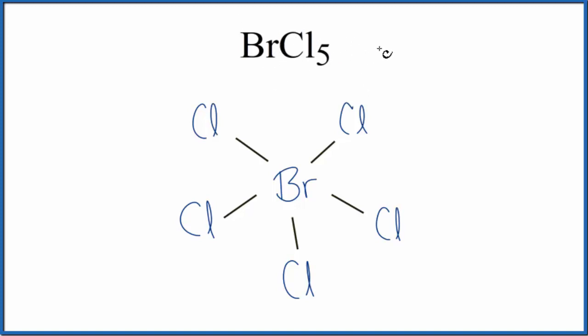Bromine, that's in group 17, sometimes called 7a. That has seven valence electrons, plus chlorine, that's in the same group. So that'll have seven and we have five chlorine atoms. So we're gonna multiply that by five. That'll give us a total of 42 valence electrons for the BrCl5 Lewis structure.